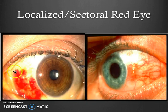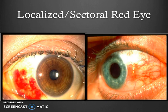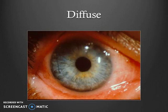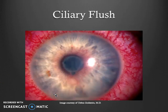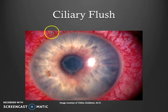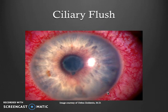Here are focal or sectoral red eyes. Here's a confluent pattern, whereas on this side you can see individual blood vessels and there's a mass lesion. There's also a diffuse pattern of red eye — sometimes people describe this as a pink eye. And here we see ciliary flush, where you can see individual blood vessels approaching the cornea. This type of redness can be present in eyes with corneal inflammation, uveitis, or acute angle glaucoma, and is generally not a simple conjunctivitis.